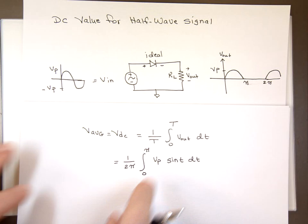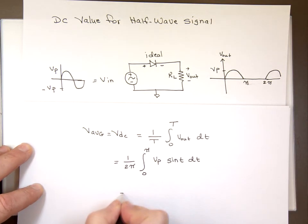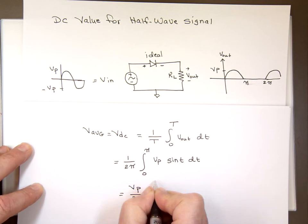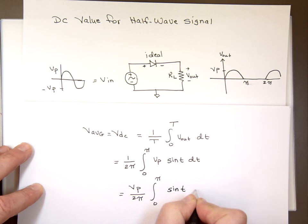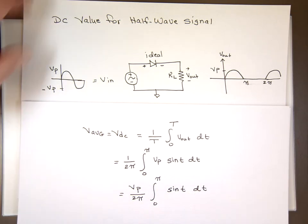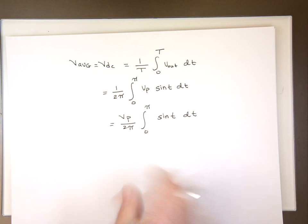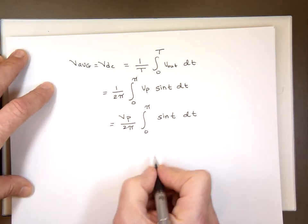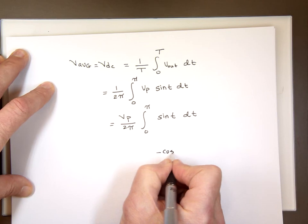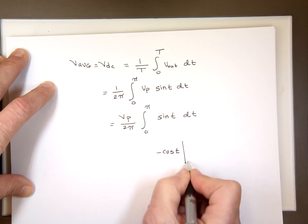I can pull the V-peak outside the integral. And that would be the integral from 0 to pi of sine of T. Again, if you don't have calculus, not a big deal. We need to know what the integral of sine is. And if you took calculus, you know the answer to this is negative cosine of T from 0 to pi.